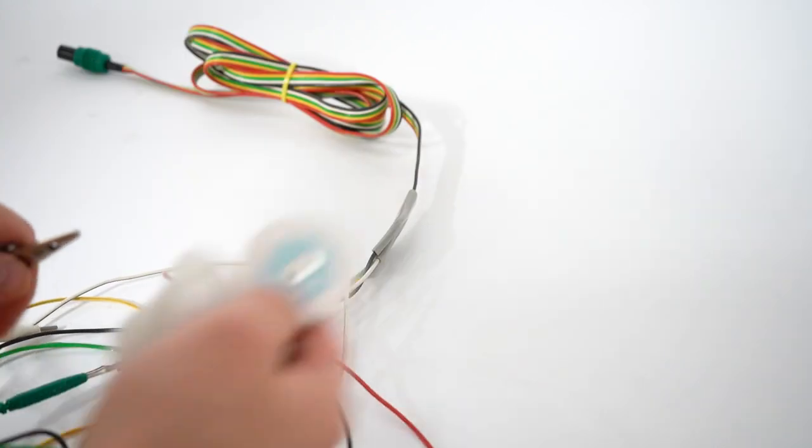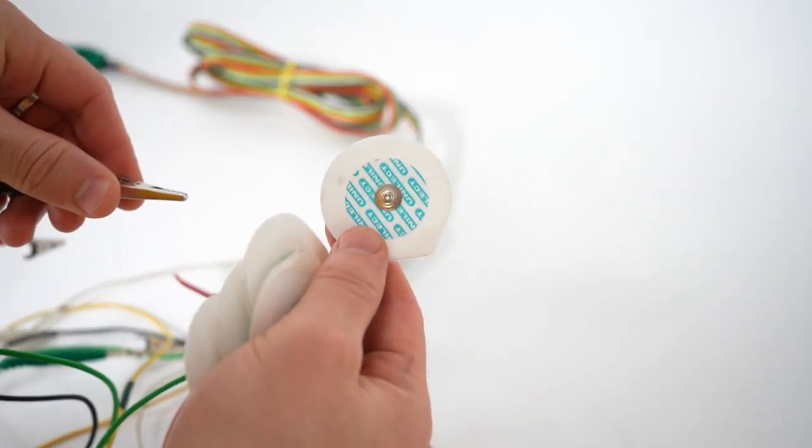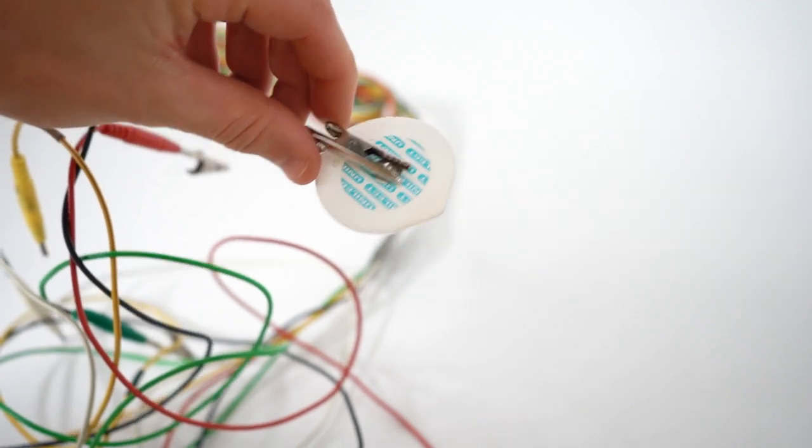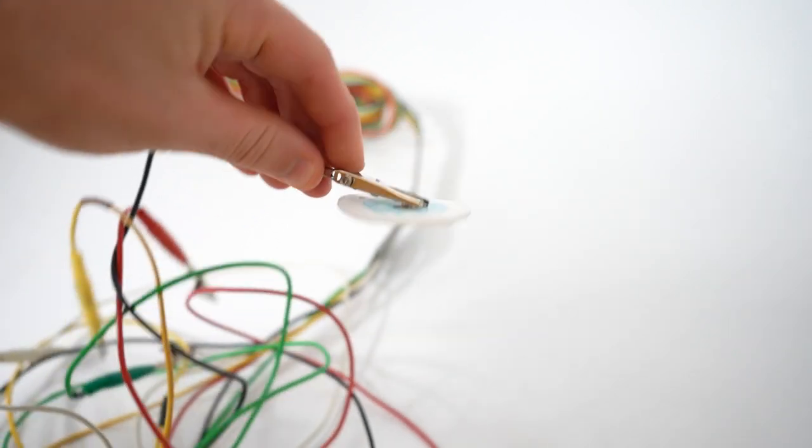You'll also receive these cables to attach to the patient. Simply clip the wires to the electrodes, then stick them to the patient. You don't need to attach these to the machine, as the simulator is already attached.